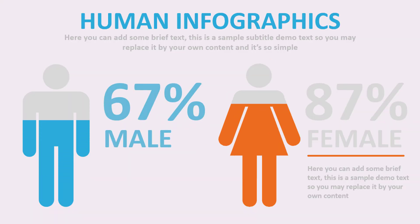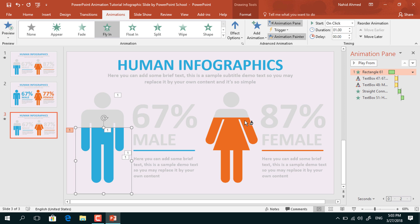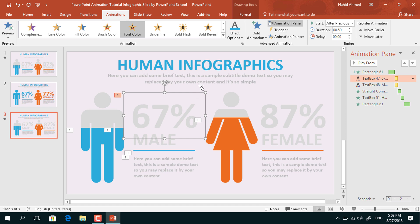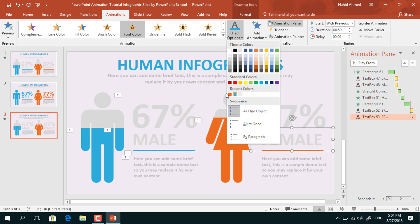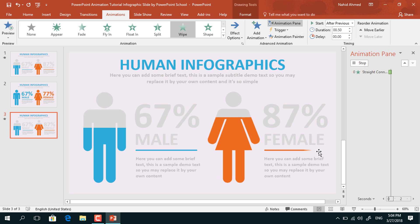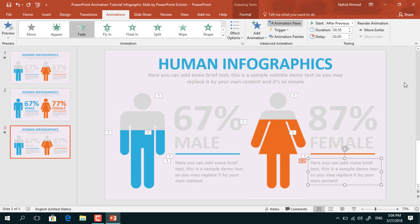As we need the same animation on this female body shape, I will use the Animation Painter tool. Select the first one, click on Animation Painter to copy and paste it here, set it to start After Previous. Select the first text box, click on Animation Painter to copy the animation and paste it here — make sure you change the color from Effect Options. Then select the second text box, click on Animation Painter to copy, paste it here, and change its color also. Select this line shape, click on Animation Painter to copy, paste it over here. Select the last text box, click on Animation Painter to copy and paste it here, and we are done.